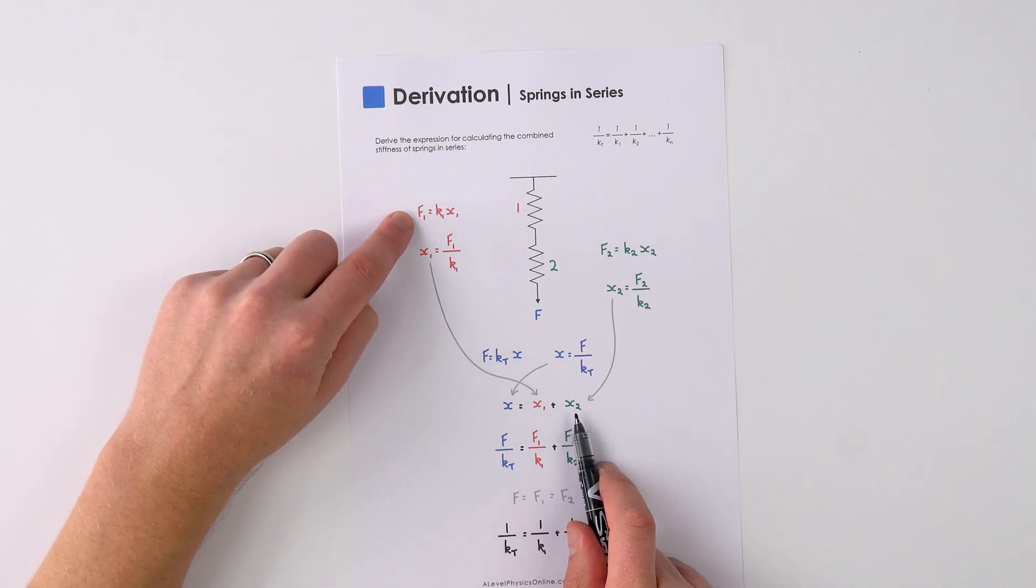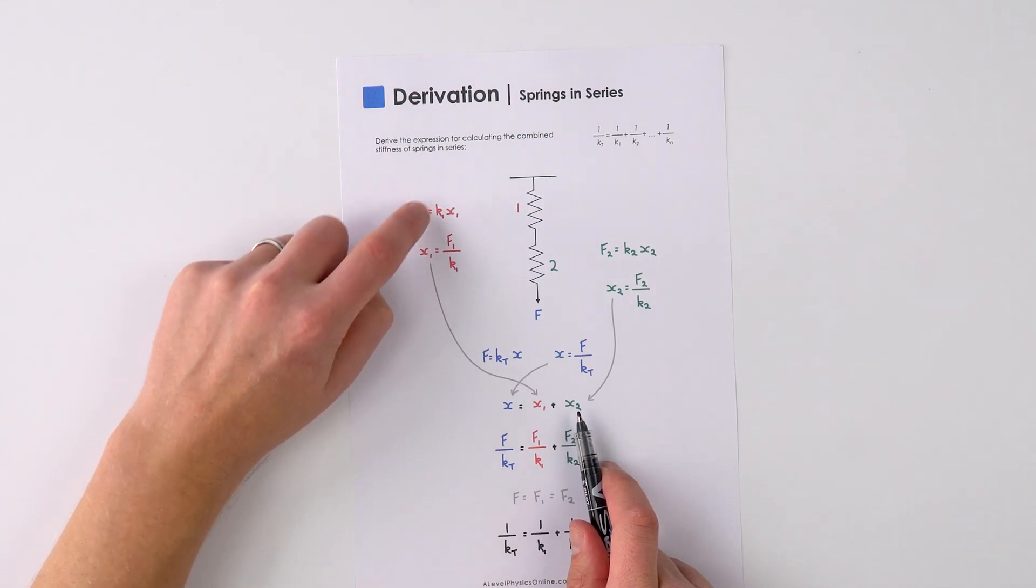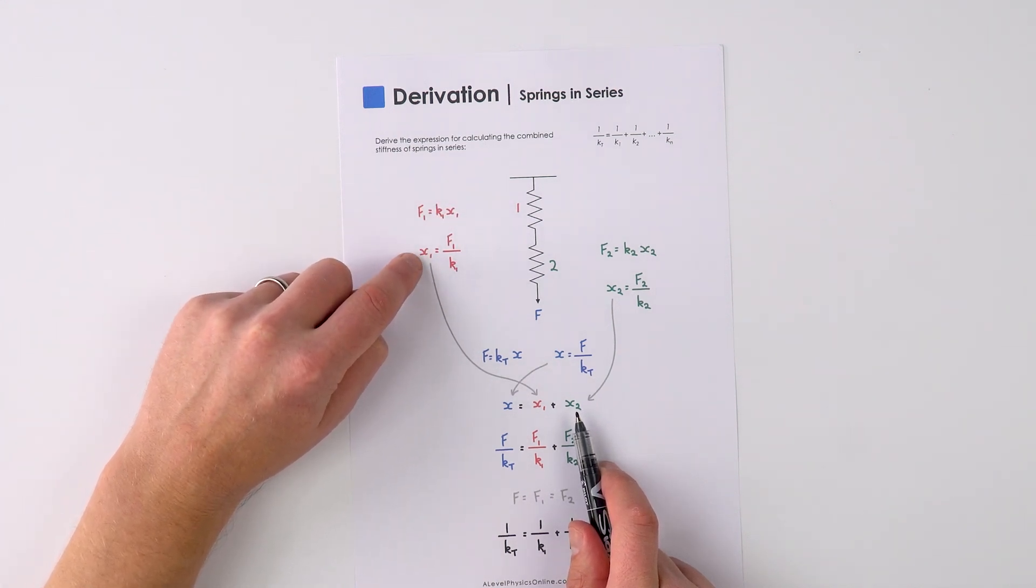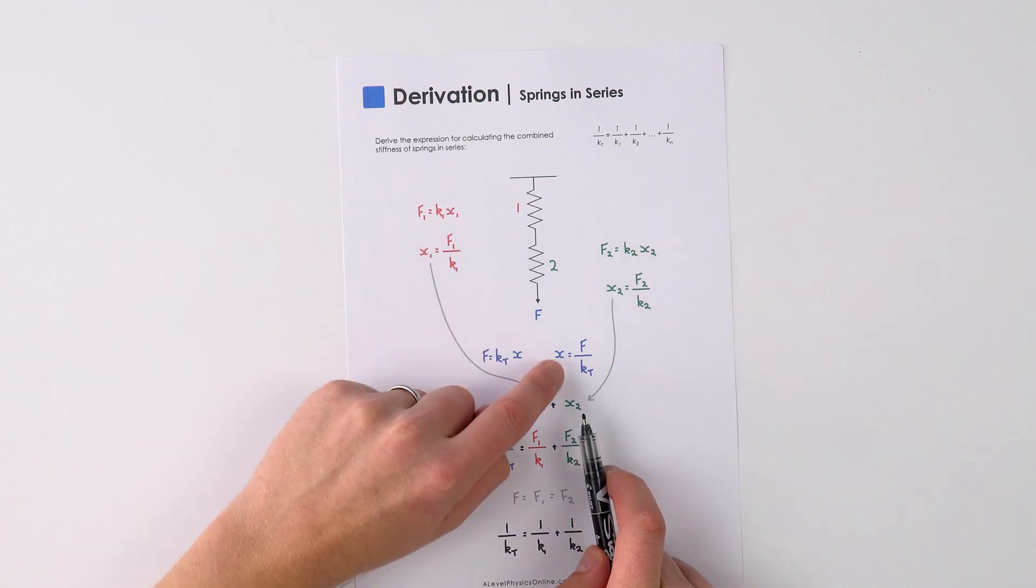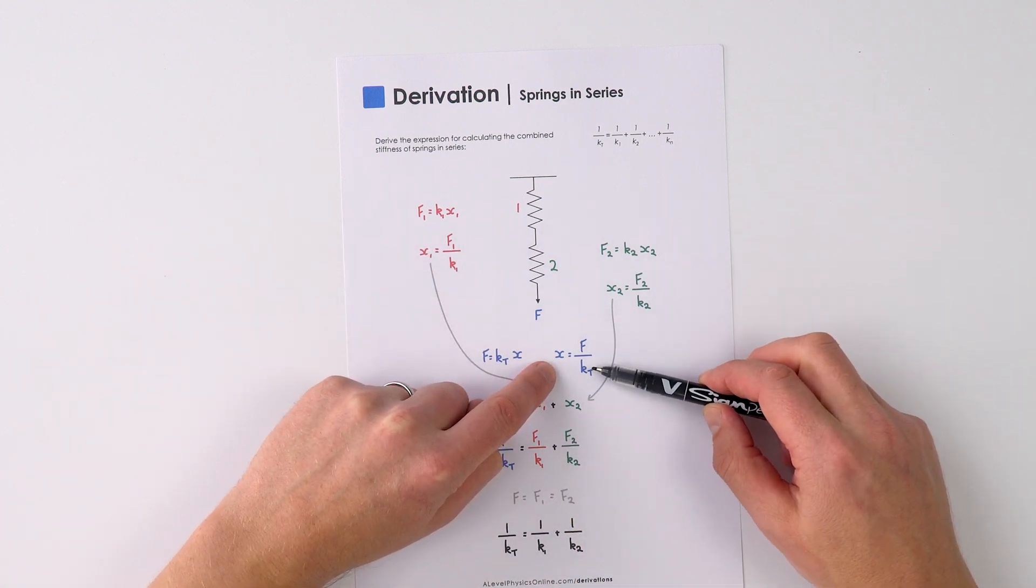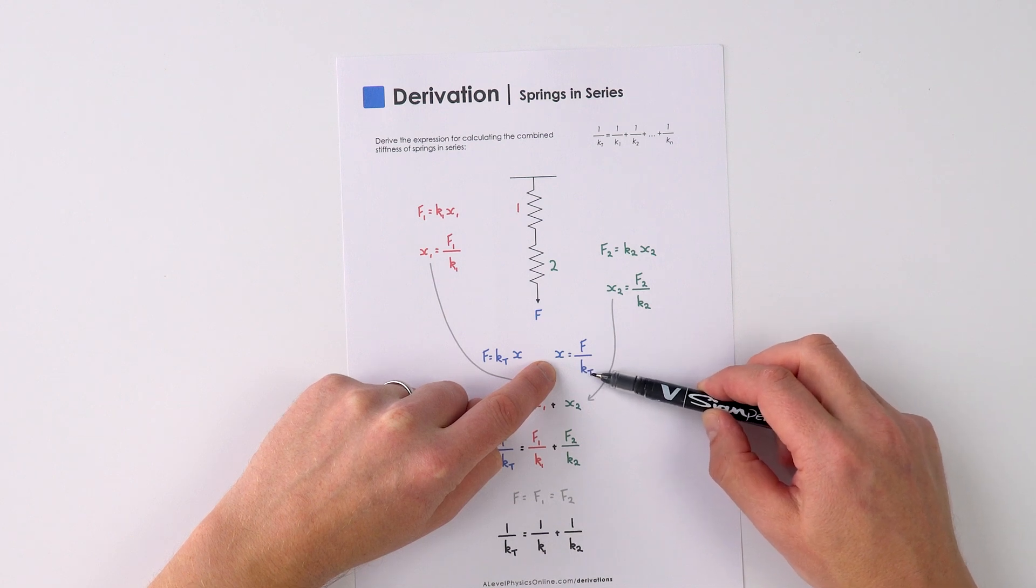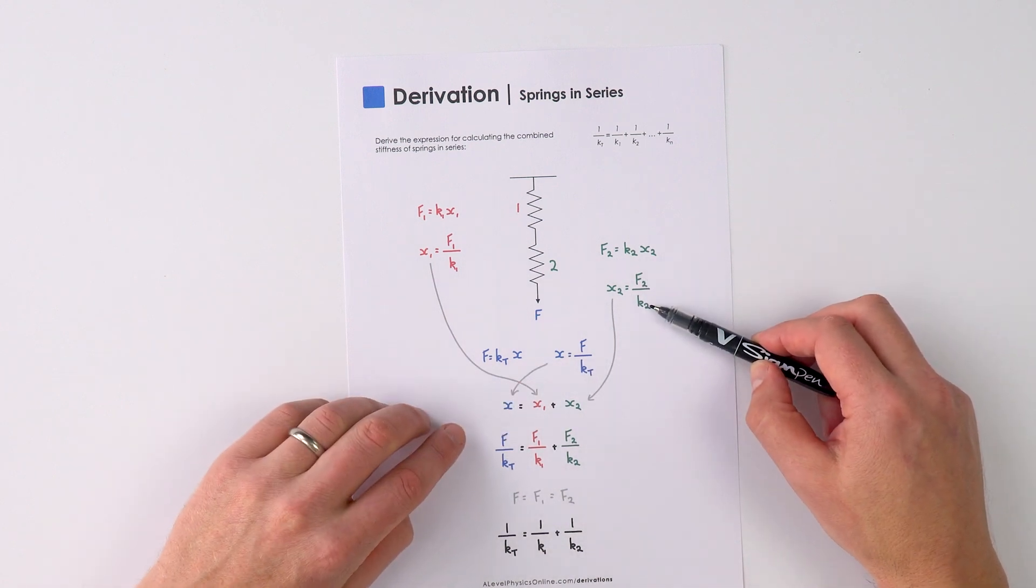Now we've got this equation that this force is equal to the spring constant times the extension, and if we rearrange that to make the extension the subject, we can say that x1 equals f1 over k1, x is equal to the total force over the combined or total spring constant, and x2 is f2 over k2.